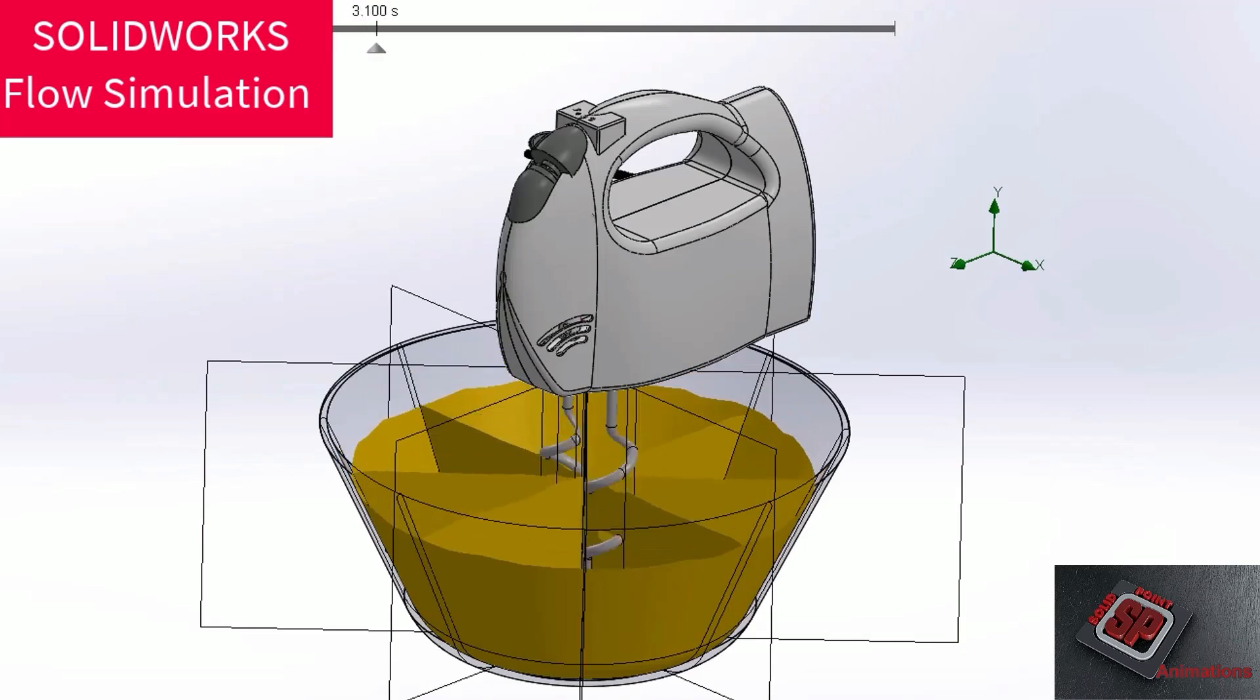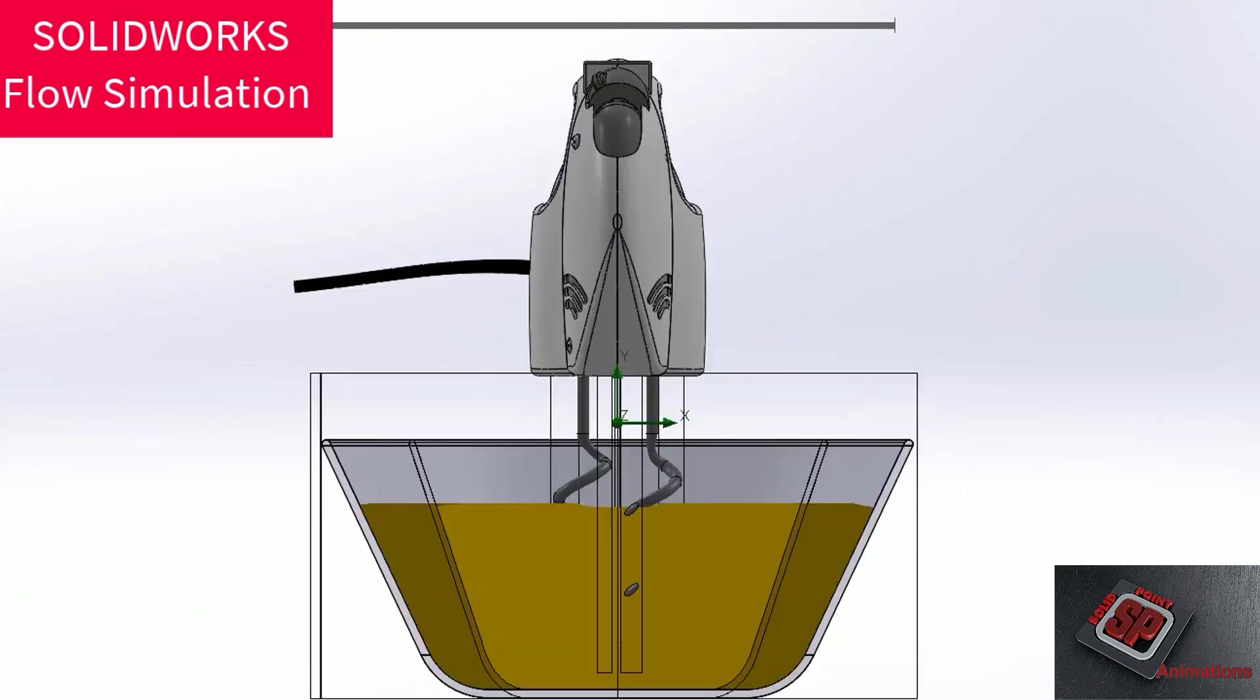My sister used to mix applesauce with different kinds of Kool-Aid to make different flavors of applesauce. Using dough hooks, we are going to show a flow simulation of the hand mixer mixing applesauce to give you an idea of what this mixing process might have looked like. As you can see, the applesauce is mixed via the counterclockwise spinning action of the dough hooks.